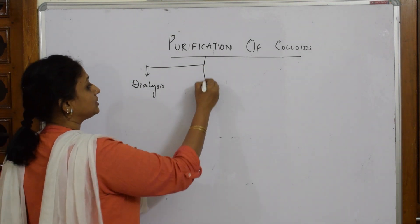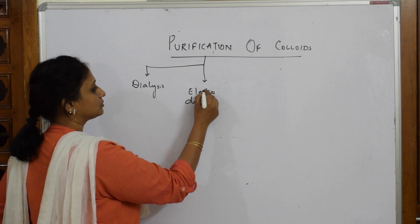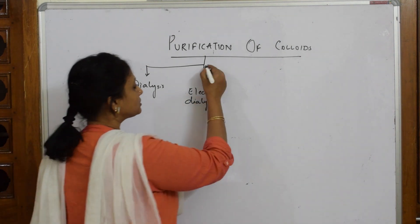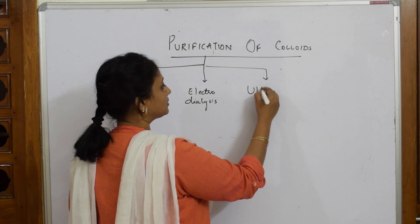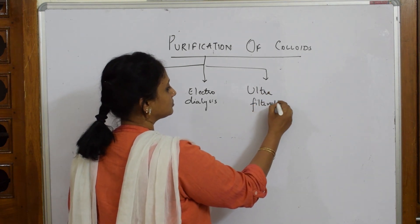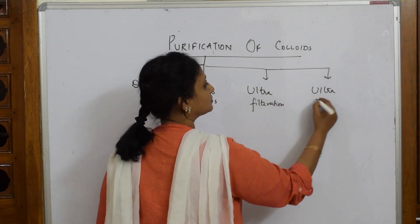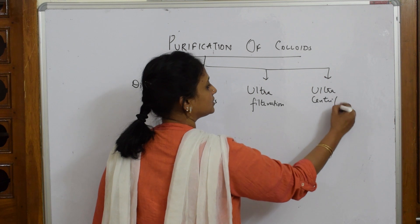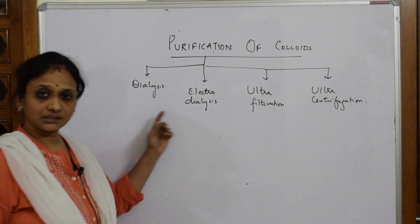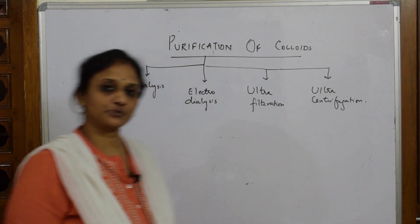Then we will learn electro dialysis. They can also be purified by ultrafiltration and by ultracentrifugation. So the four methods are: dialysis, electro dialysis, ultrafiltration, and ultracentrifugation. Let us see the process.